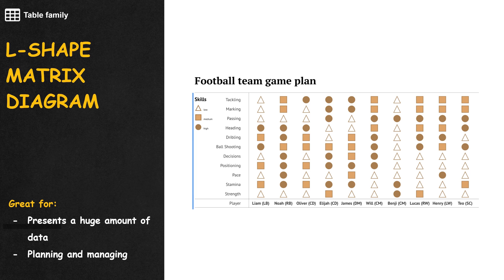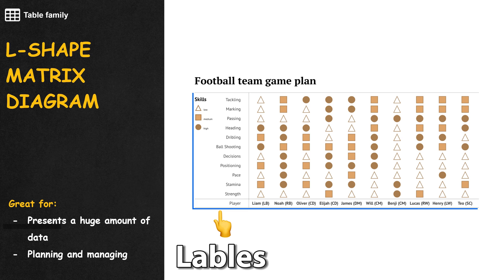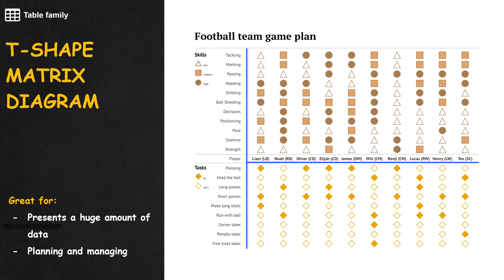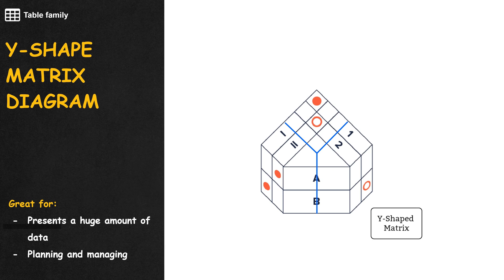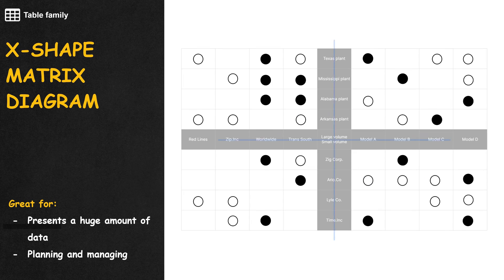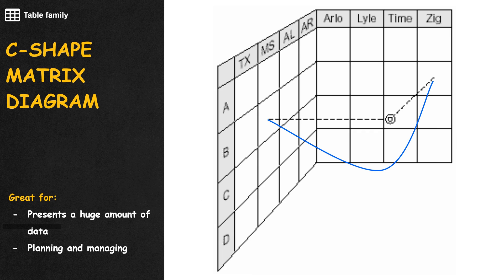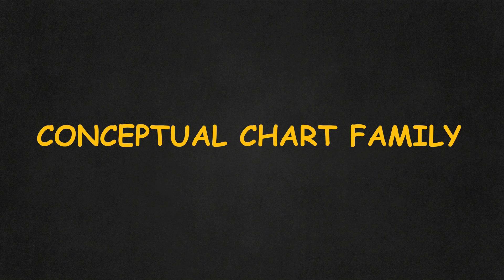Most basic tables are just L-shaped matrices where the labels are on the sides. We also have the T-shaped matrix, the Y-shaped matrix, the X-shaped matrix, the C-shaped matrix, and the roof-shaped matrix.